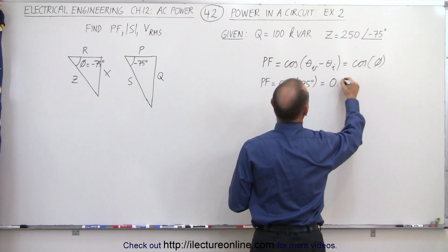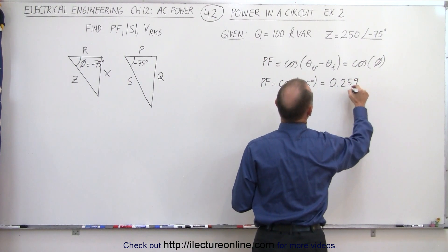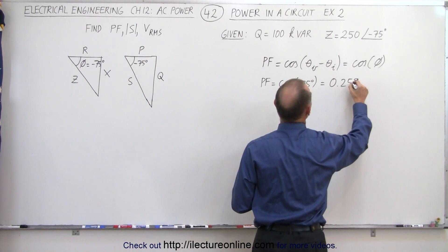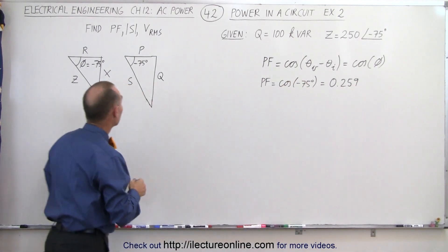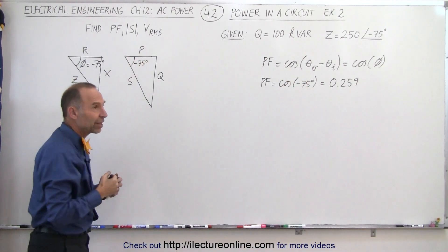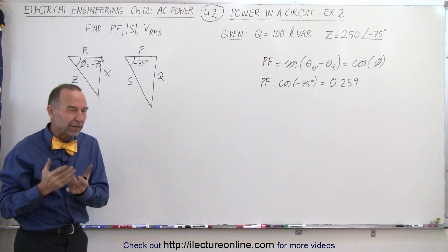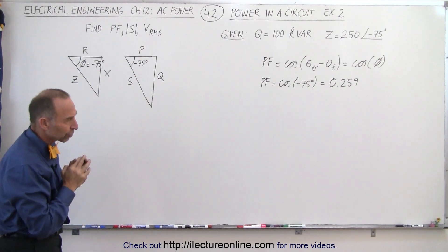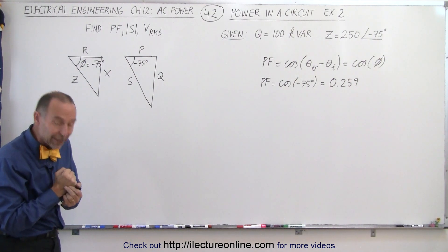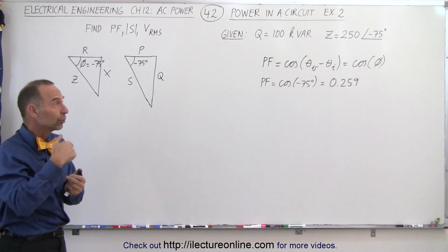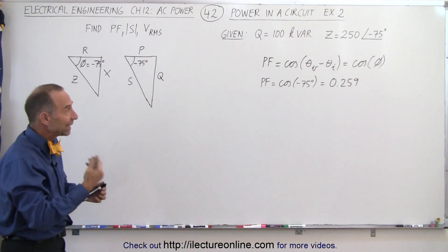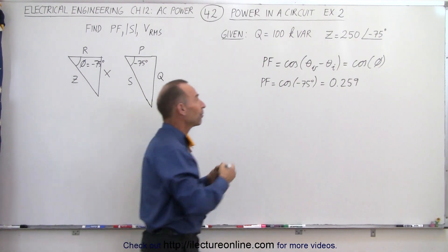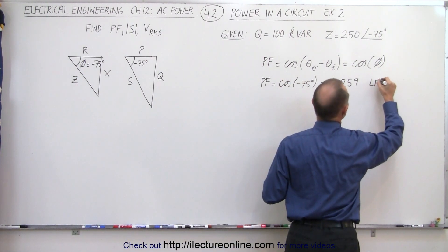The power factor is 0.259. Now we need to determine if it's lagging or leading. We have a negative phase angle, which means we have a capacitive circuit. A capacitive circuit means that the current leads the voltage, and if the current leads the voltage, we have a leading power factor.